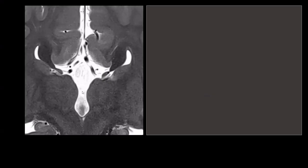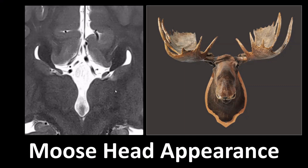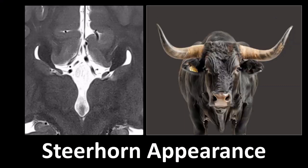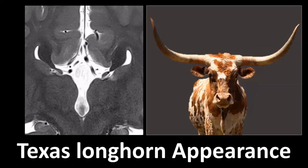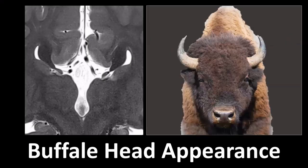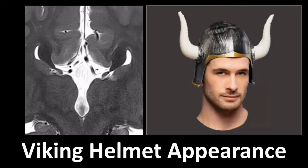This gives rise to various signs. The appearance of the third ventricle and lateral ventricles in the coronal plane can be likened to a moose head, a steer horn, a Texas longhorn, a buffalo head, or even a viking helmet appearance — despite the fact that historically, viking helmets didn't have horns. That was Richard Wagner's invention in his operas, so 'viking helmet' is historically an incorrect term.